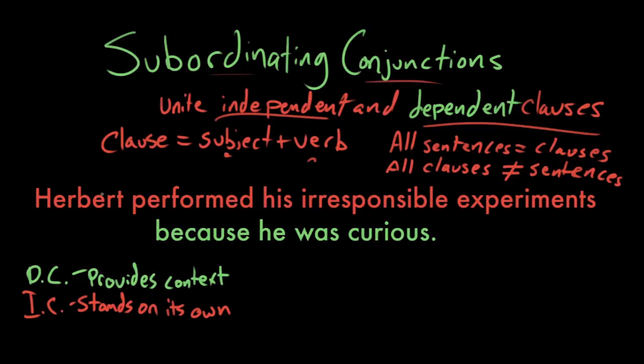So let's take a look at this sentence here. Herbert performed his irresponsible experiments because he was curious. And this sentence is composed of two clauses. In red, we've got this independent clause: Herbert performed his irresponsible experiments. And in green, we have this dependent clause: because he was curious. Now, we know that because he was curious is the dependent clause, because it explains more of why Herbert did what he did. It is explaining the reason for his performing irresponsible experiments.